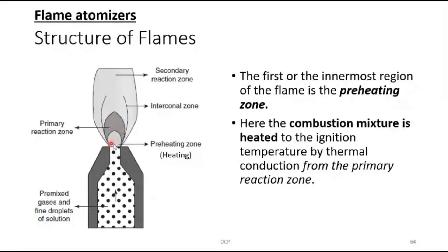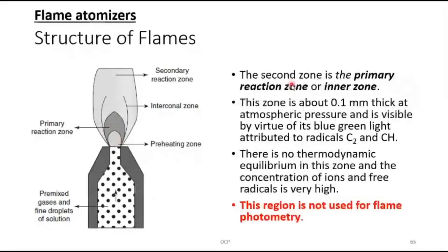The second zone is primary reaction zone, also called inner zone or inner cone. This zone is about 0.1 millimeter thick at atmospheric pressure and is visible by virtue of blue green light attributed to radicals C2 and CH. There is no thermodynamic equilibrium in this zone and the concentration of ions and free radicals is very high. This region is not used for flame photometry.